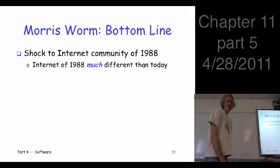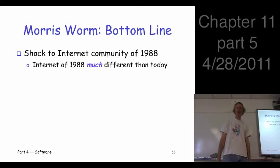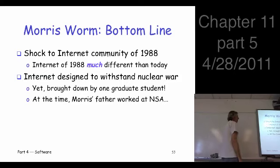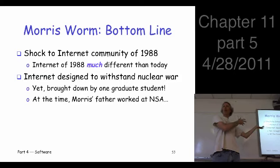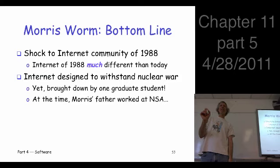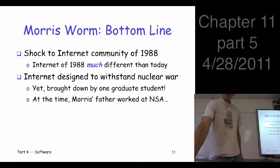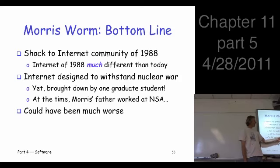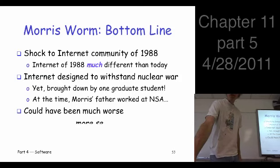The bottom line on the Morris worm: this really was a shock to the internet community of 1988. People claim the internet was designed to withstand a nuclear war — this very distributed system — yet it was brought to its knees by a lone graduate student named Morris. And Morris' father worked at the NSA at the time. This thing could have been much worse — Morris had root access to a lot of machines and could have done all kinds of malicious stuff, but he didn't. I think that's probably what saved him from serious prosecution.